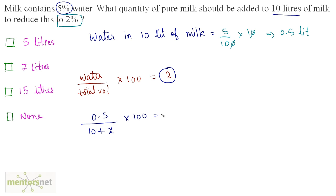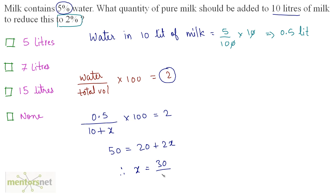So, the total volume is currently 10 liters plus some more milk x that we will add. Setting up the equation: 0.5 / (10 + x) × 100 = 2%. Simplifying: 50 = 2(10 + x), so 50 = 20 + 2x, giving x = (50 − 20) / 2 = 30 / 2 = 15 liters. Therefore, we should add 15 liters of milk in order to reduce the percentage of water to 2%.